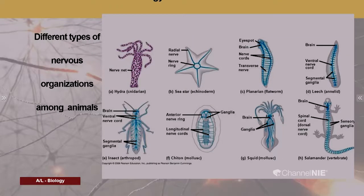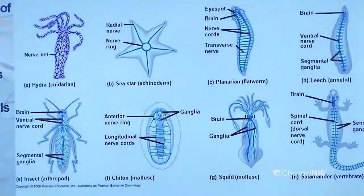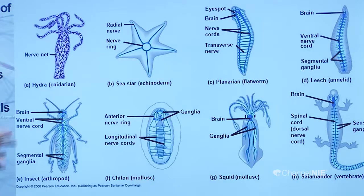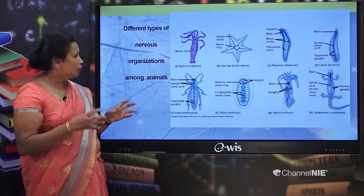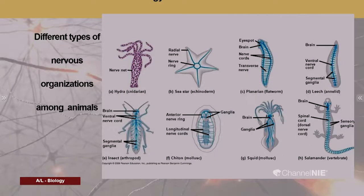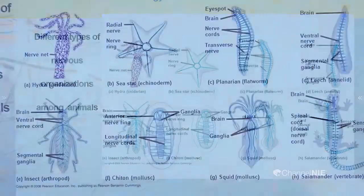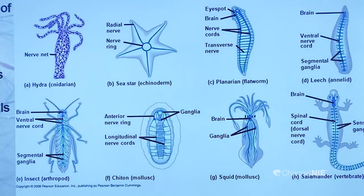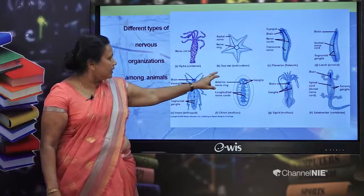Here we can see different types of organisms studied in biodiversity. Cnidarians, for example hydra, are the simplest group of organisms having nervous tissue. They possess a nerve net — an interconnected network of neurons. This nerve net is sufficient for this group to carry out muscular contraction, allowing them to receive stimuli and respond. Coordination is done entirely by the nerve net.